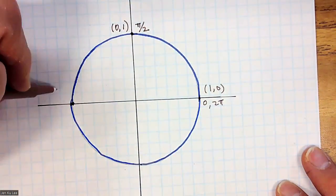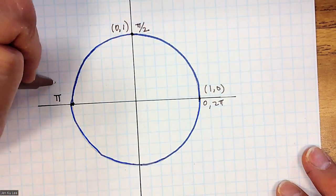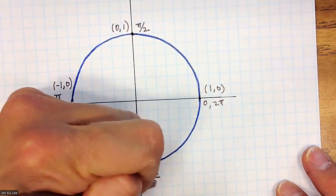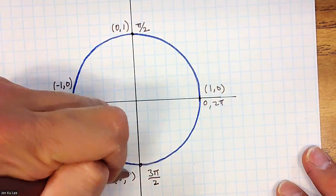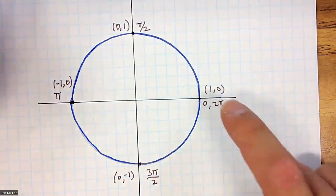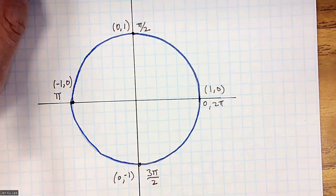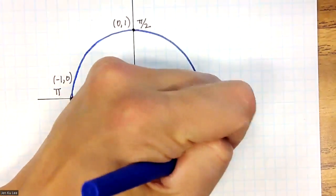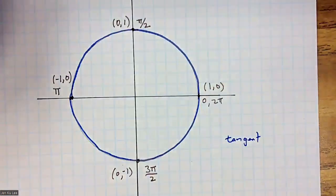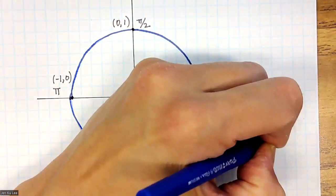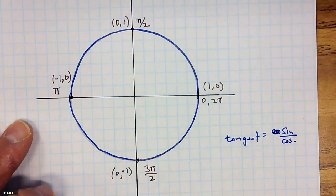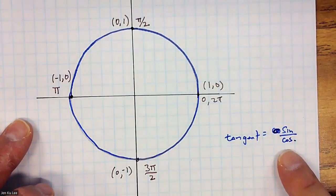The point at π is (−1, 0), and 3π/2 is at (0, −1). You know that the coordinate is (cosine, sine). Also, we know that tangent equals sine over cosine. Tangent equals sine over cosine.